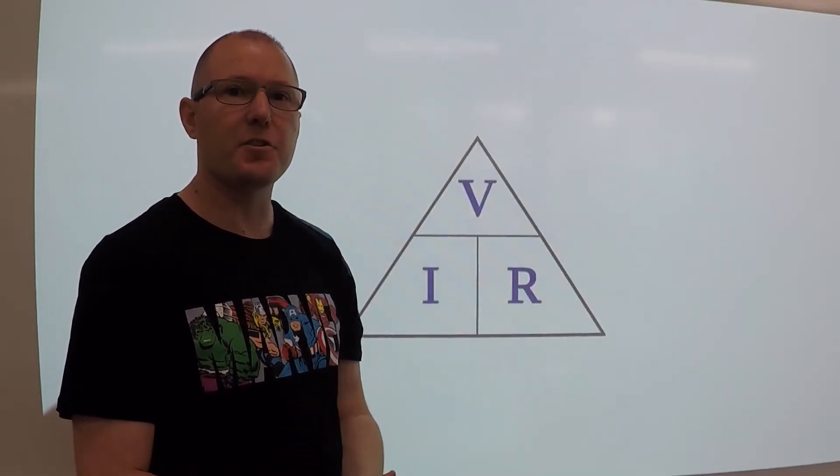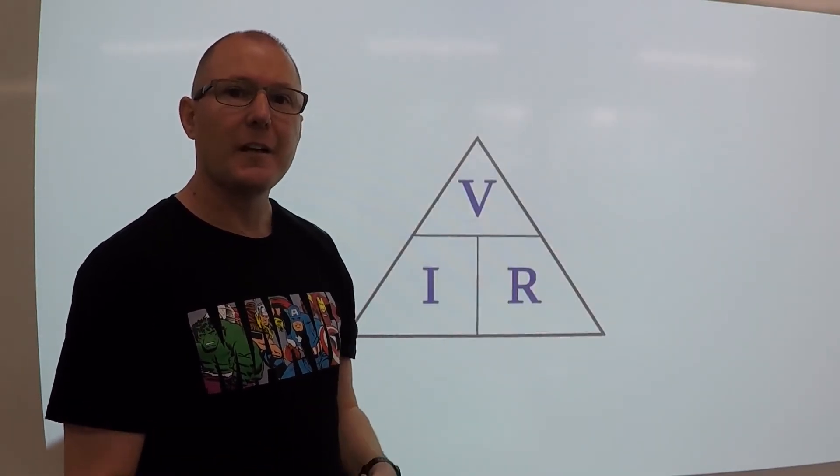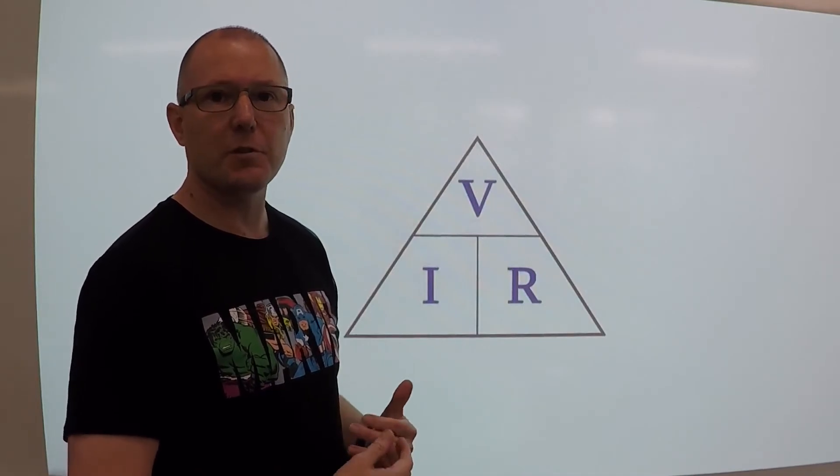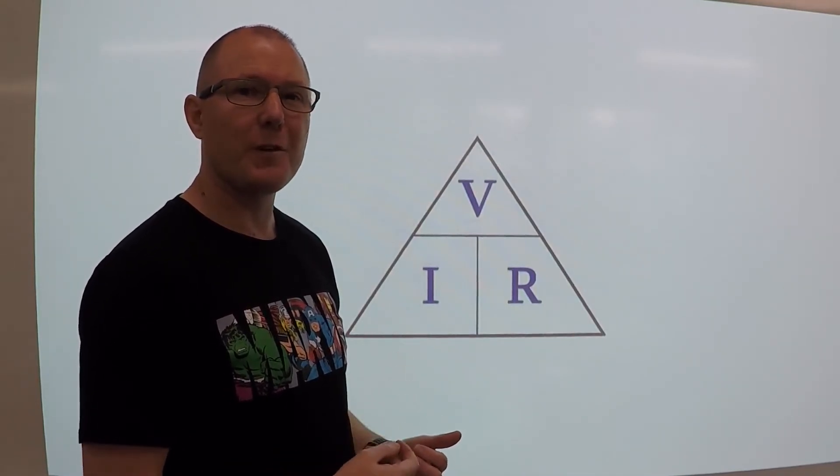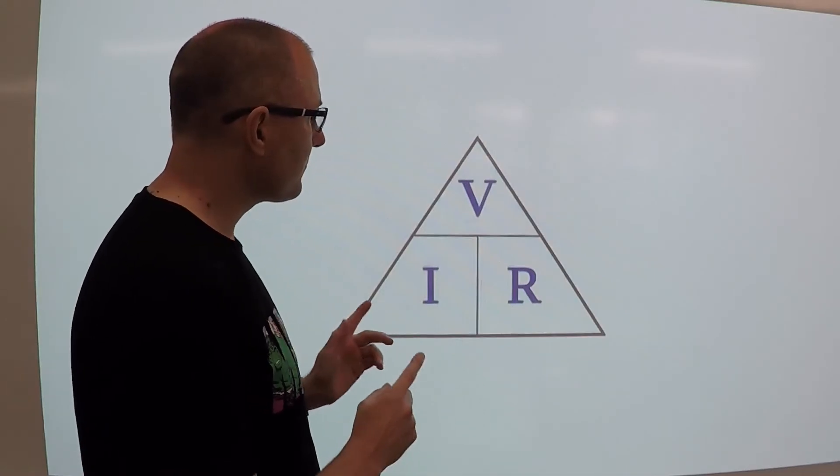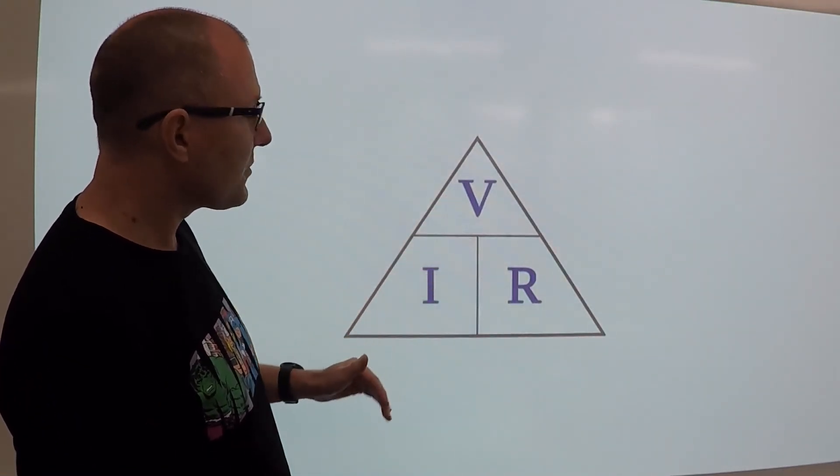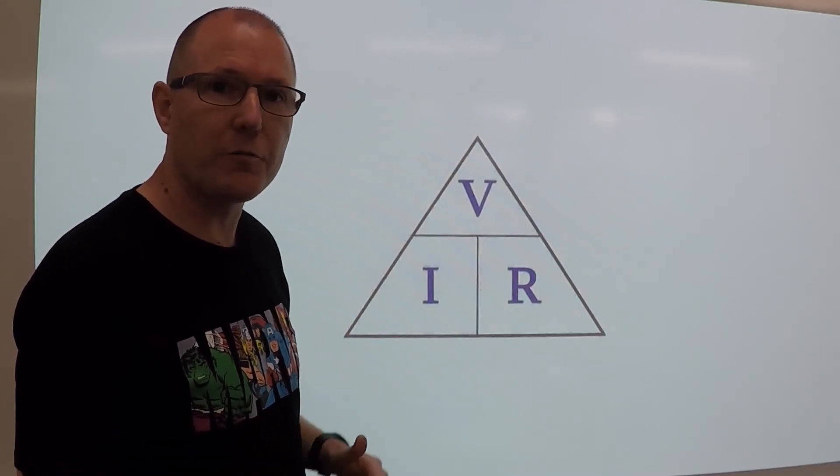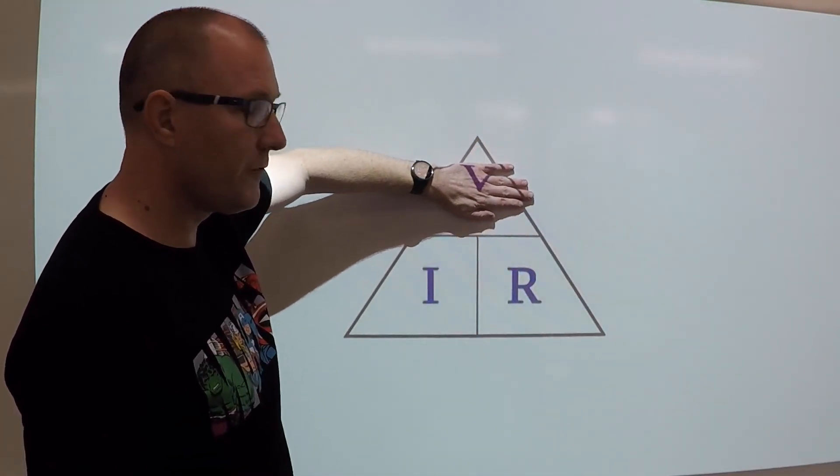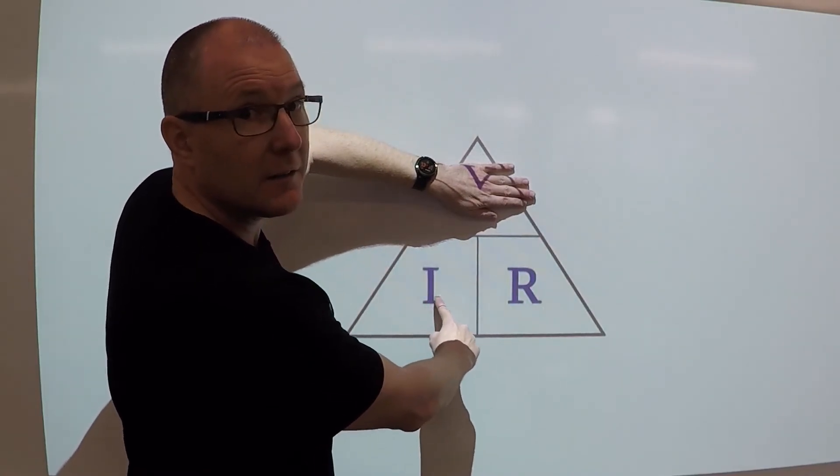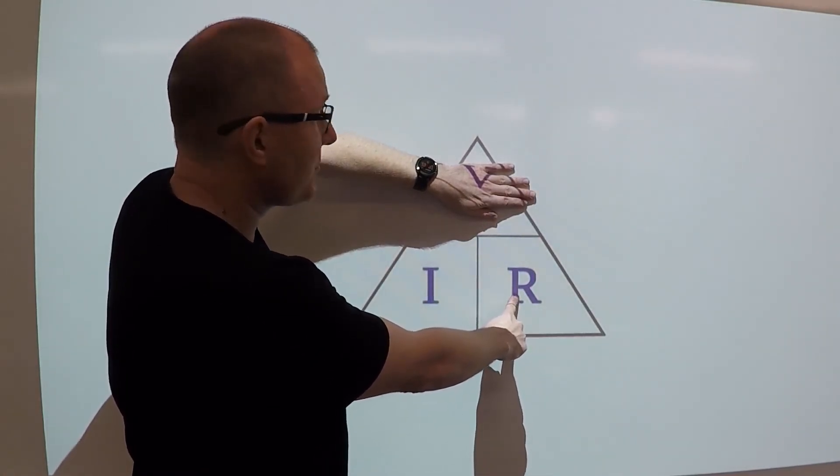Let's have a look at the magic triangle of Ohm's law. If you draw this in your books, or in your notes, you can always refer to it, and you'll remember the formula. So, if we have a look at this, V's on top, so let's say we're looking for voltage. So what we do is we cover up the V, and we've got I, R, so I times R.